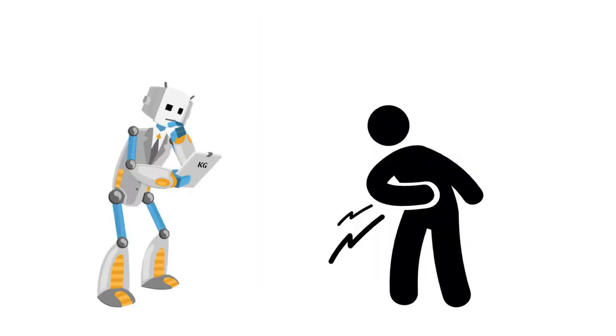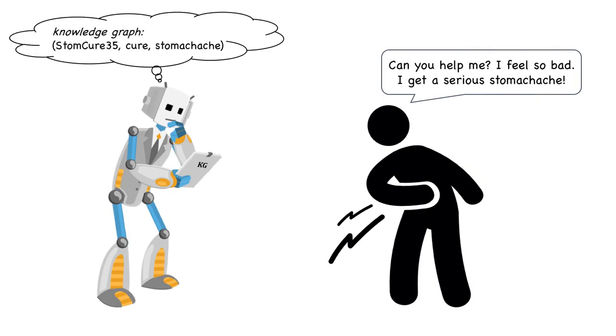One day, George comes in with a painful stomach ache, asking for help. The AI finds the factual relation StomCure35 cures stomach ache, and tells George to take StomCure35.